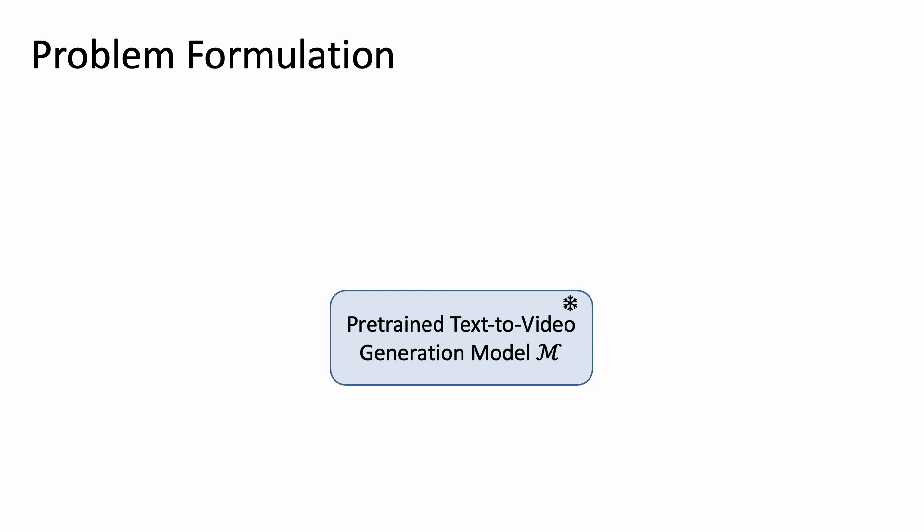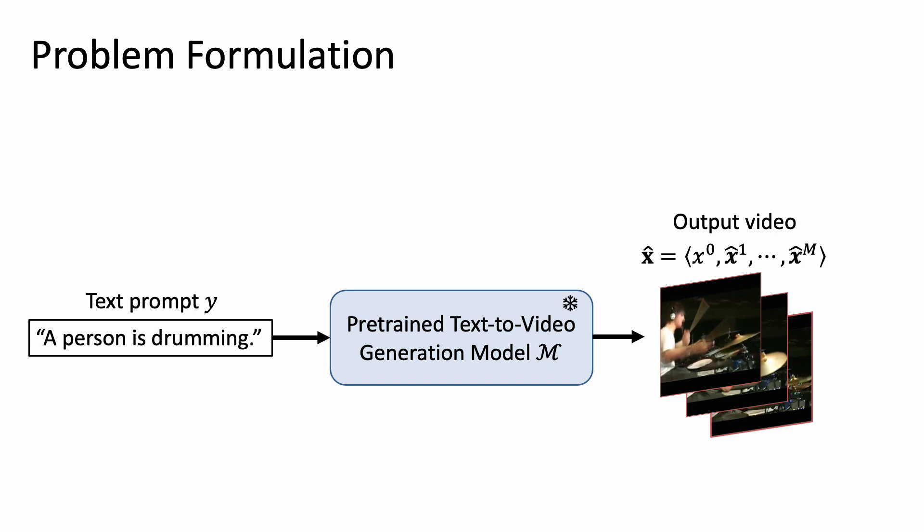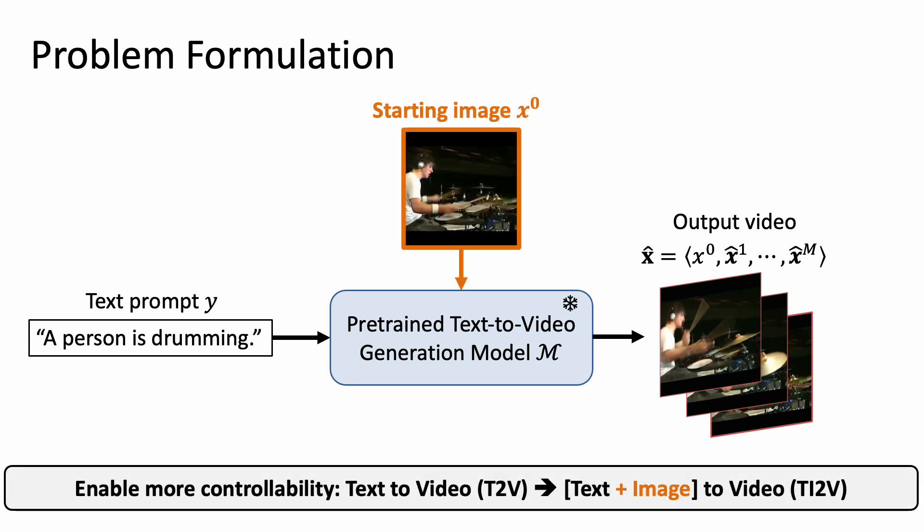Given a pre-trained text-to-video generation model, we pass in a text prompt and generate an output video. We would like to have more control of the output video by inputting a starting image as the first frame. Thus, the video generation will be controlled by text plus the given image without any training or fine-tuning.